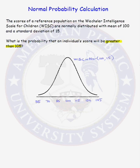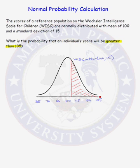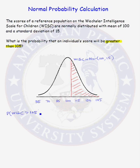Now we should shade the area under the curve that our probability represents. We want to know the probability that the WISC score is greater than 105. The shaded region in our curve represents that probability. Any time that you are asked to find a probability, you should write a probability statement. We are looking for the probability that a WISC score is greater than 105.